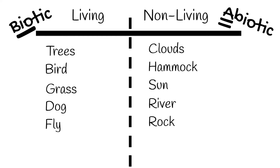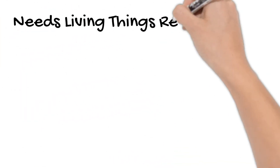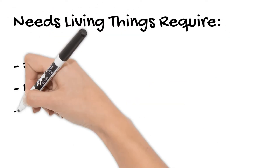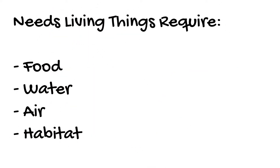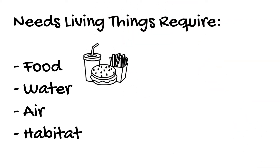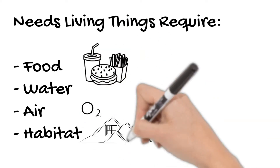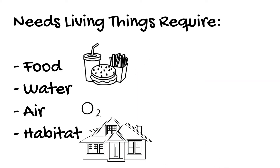If you had trouble sorting something into your columns, here's a tip. All biotic things have four needs. These are food, water, air, and habitat. Any biotic thing you can think of will need those four things. You yourself need food and water for your body to function correctly. Your lungs breathe the oxygen from the air, and your habitat is your home, the safe place you live.